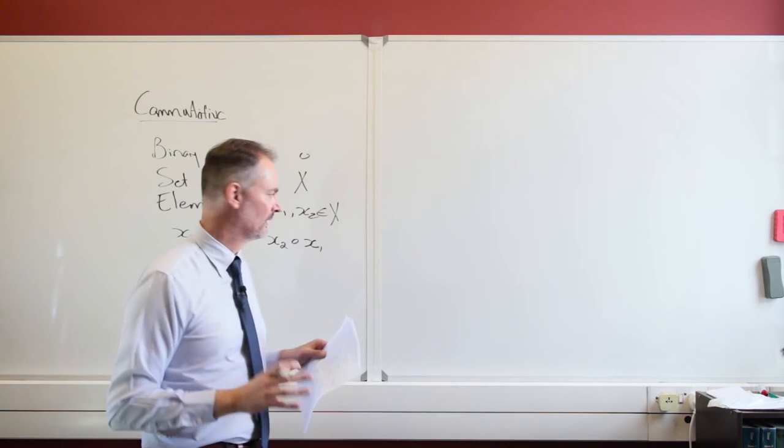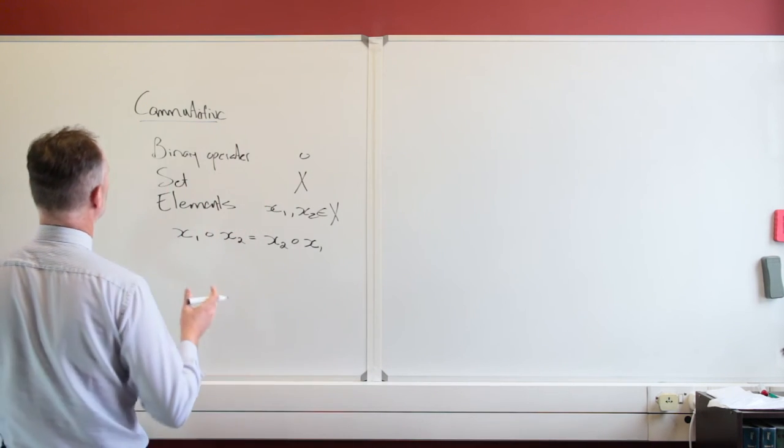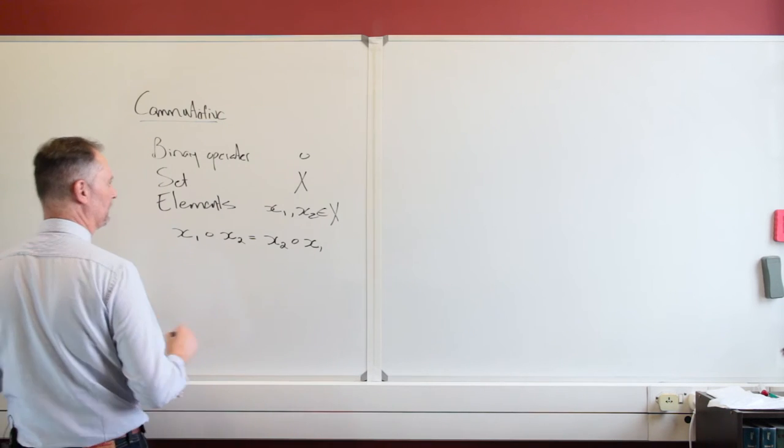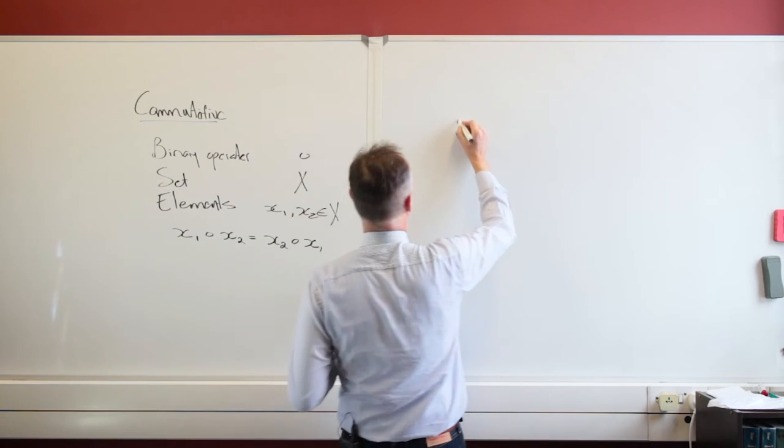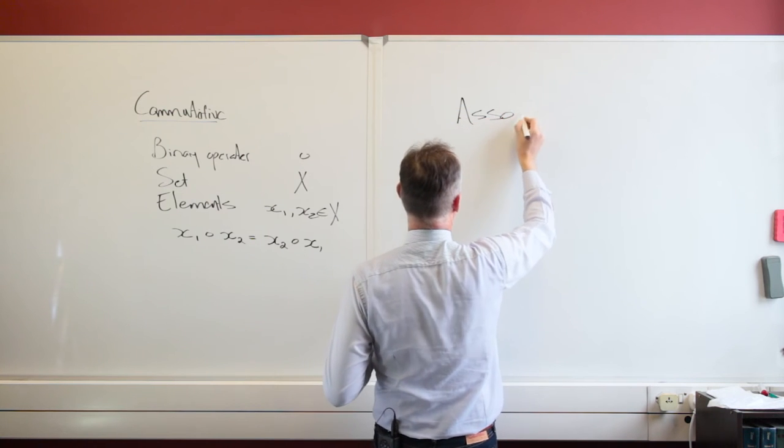we can now use it when we go to look for proofs. The same we're going to do if we look at the associative property. Let's put it up here. The associative.